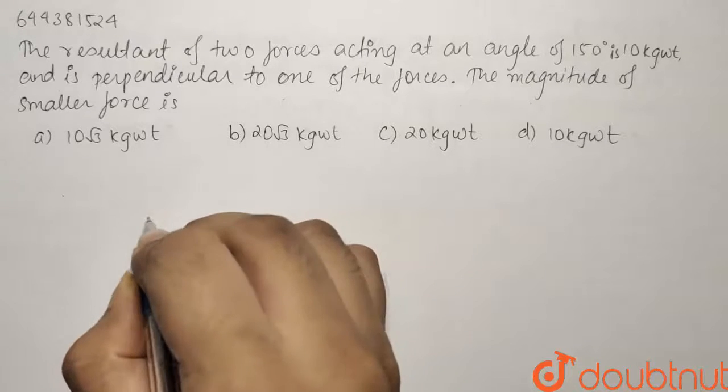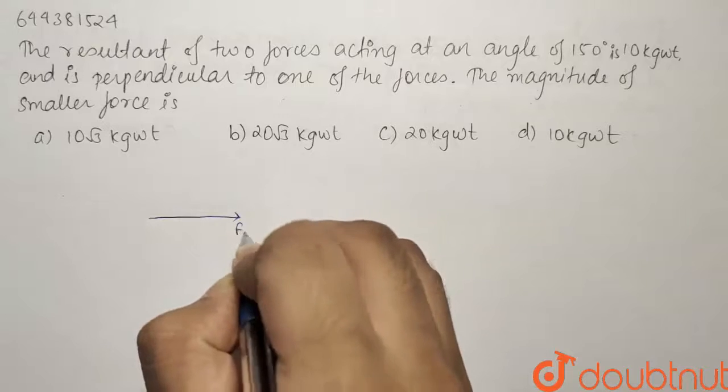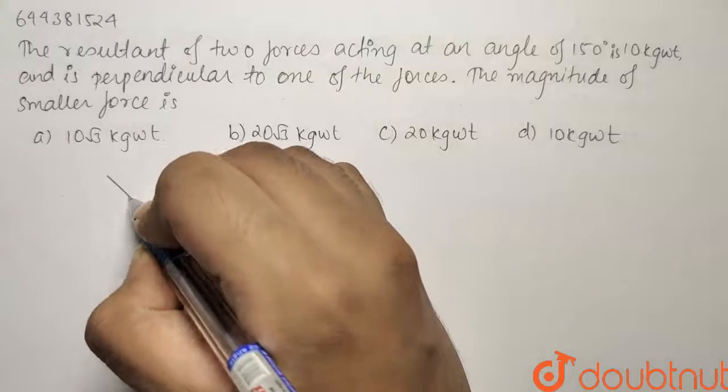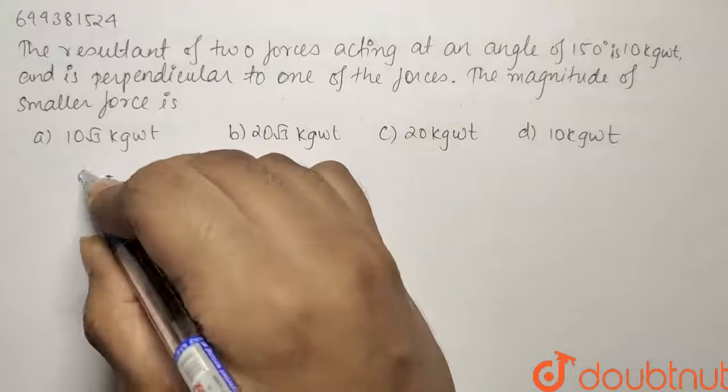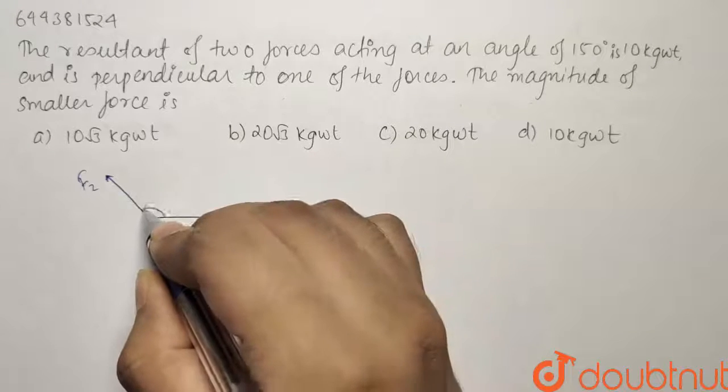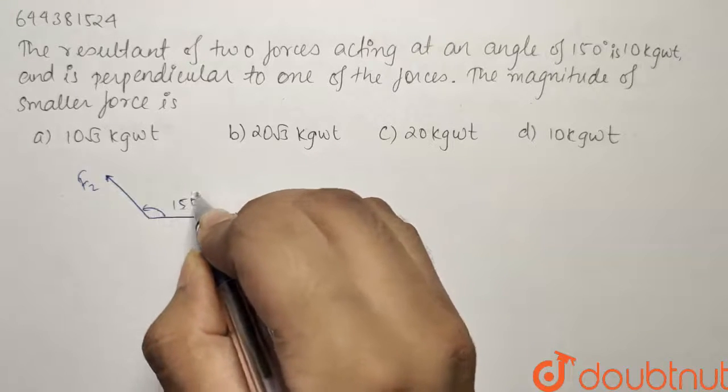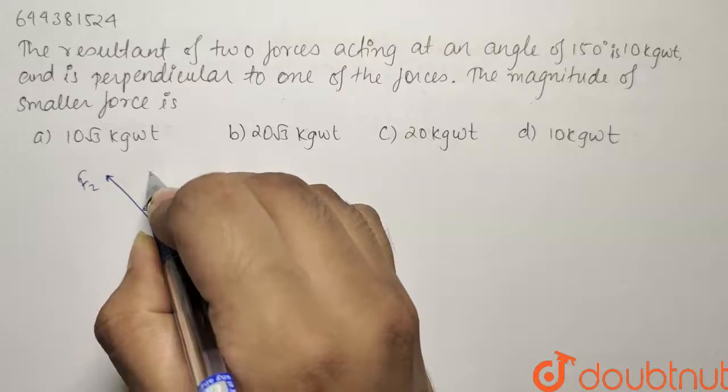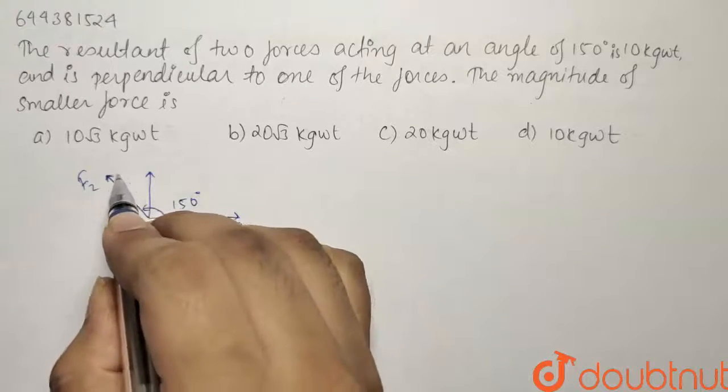If we have two forces, let's say this is your force F1, then F2 will act at an angle of 150 degrees. So this angle will be 150 degrees and the net resultant comes out to be perpendicular to F1.